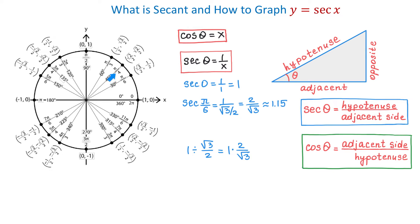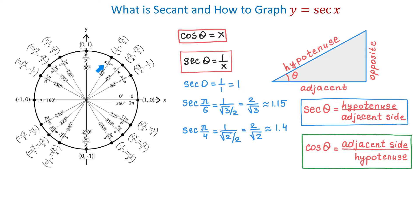At the angle pi over 4, x is square root of 2 over 2. Then secant of pi over 4 equals 1 over square root of 2 over 2, which equals 2 over square root of 2, approximately 1.4. At pi over 3, x is 0.5, so secant of pi over 3 equals 1 over 0.5, which equals 2. Then at pi over 2, x is 0, and secant of pi over 2 is 1 over 0, which is undefined.